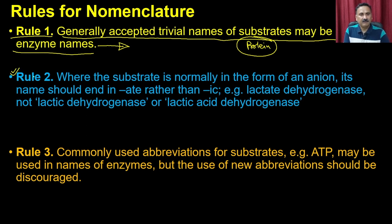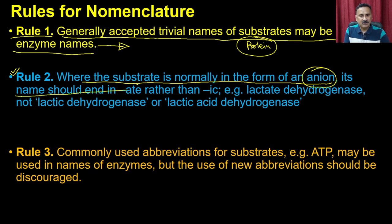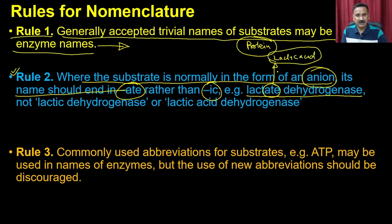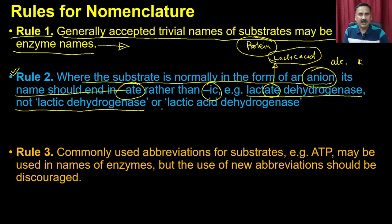Rule 2: where the substrate is normally in the form of an anion, its name should end in '-ate' rather than '-ic'. For example, 'lactate dehydrogenase' — the substrate name ends in '-ate', indicating the lactic acid anion is present as a substrate. So we use 'lactate' rather than 'lactic' — it is not called 'lactic dehydrogenase' or 'lactic acid dehydrogenase'.